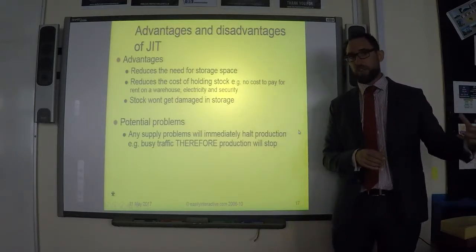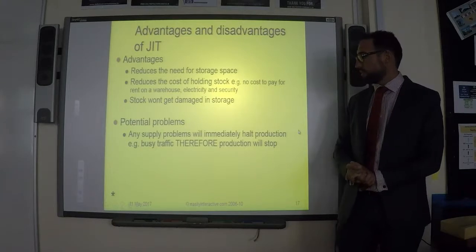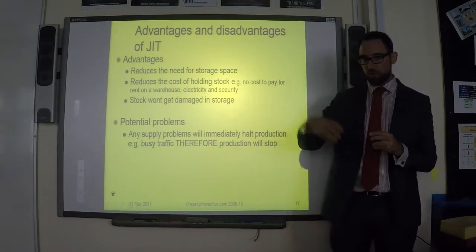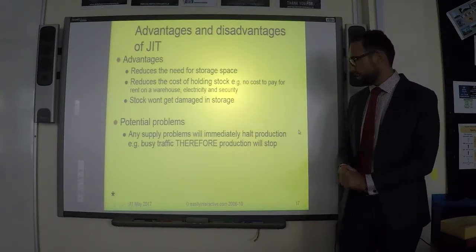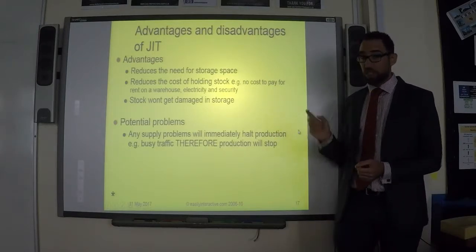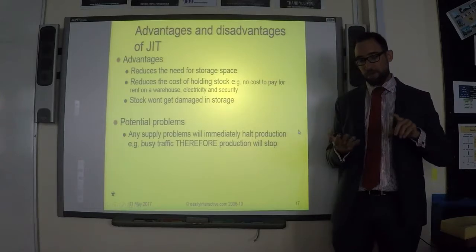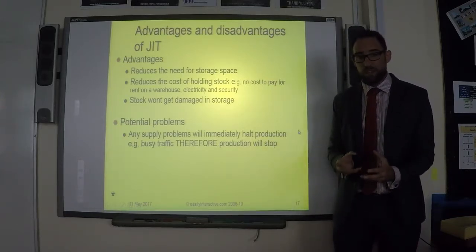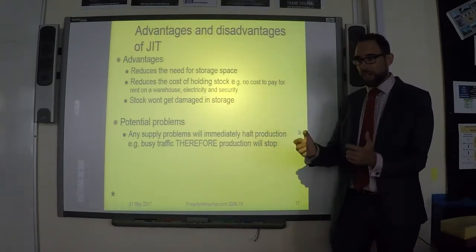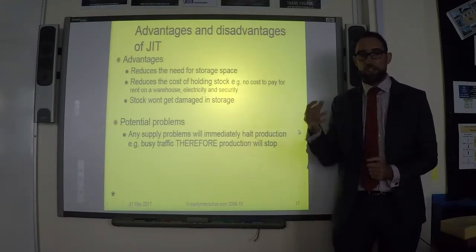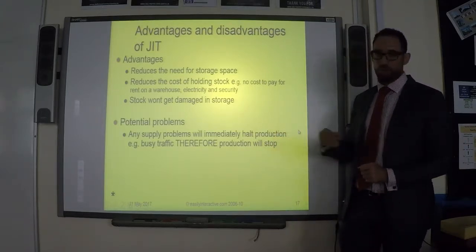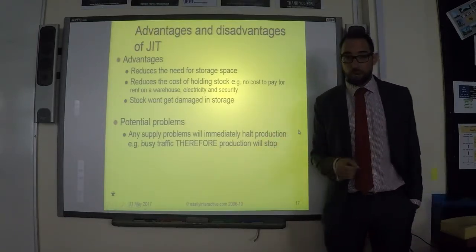The big problem with JIT is that because things come just when you need them and go straight onto your product, if your supplier is late with delivery — due to traffic, unreliability, or a forgotten order — production is going to stop. If you're using JIT and your raw materials don't arrive, you have no raw materials and cannot produce anything. This is a significant drawback of JIT.